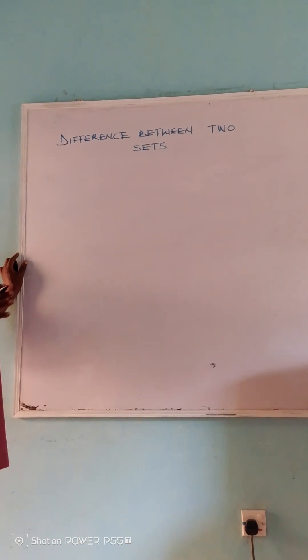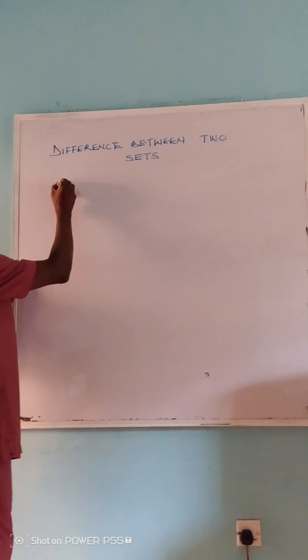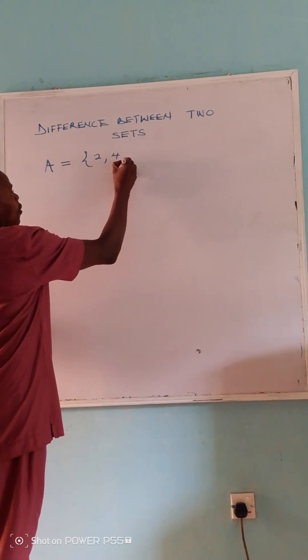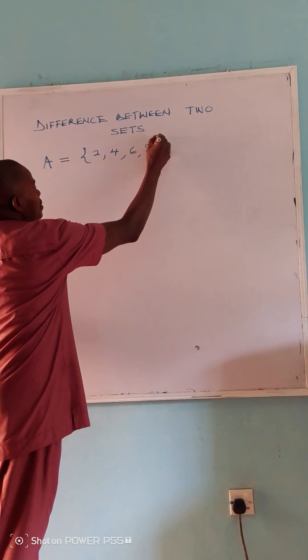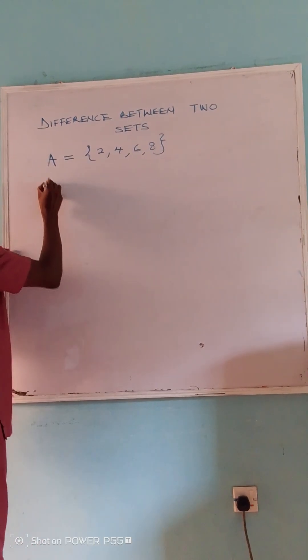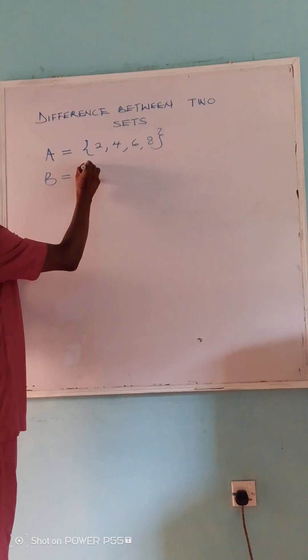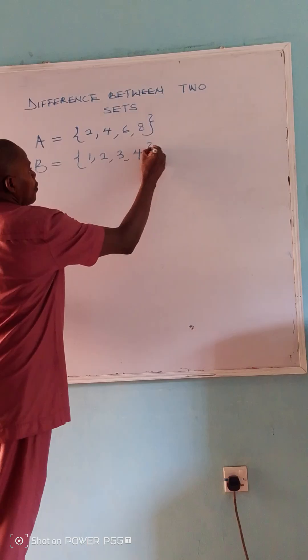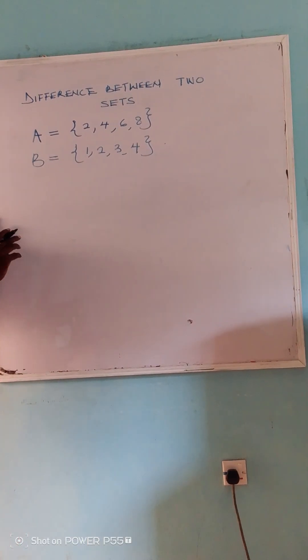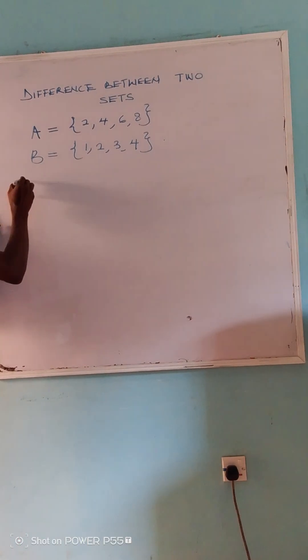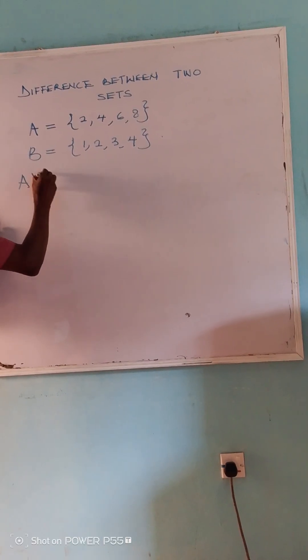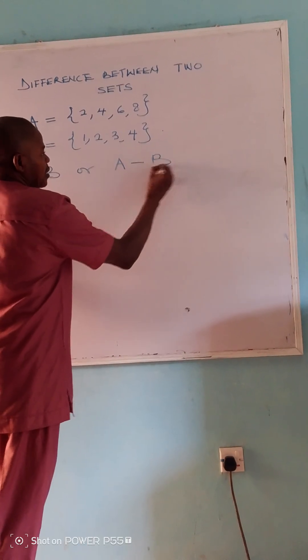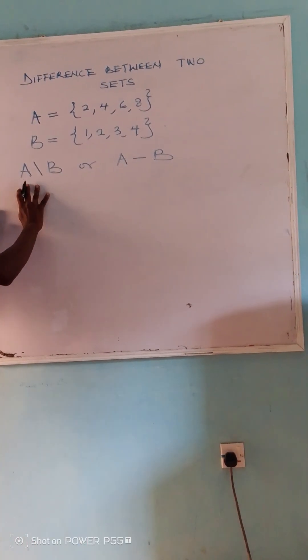Difference between two sets. Now, we're considering A to be equal to {2, 4, 6, 8} and B to be equal to {1, 2, 3, 4}. So the difference between A and B is denoted by A minus B. This is called difference between A and B.